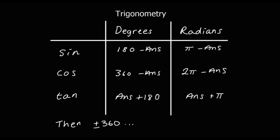Let's summarize. For sine, after you get the first answer, you do 180 minus that answer — or in radians, pi minus the first answer. For cos, it's 360 minus the first answer, or in radians 2 pi minus the first answer. For tan, we keep adding or subtracting 180, or in radians pi. Then we can always add or take away 360 to generate more answers.